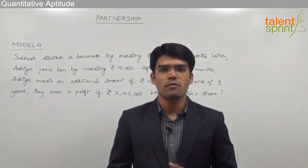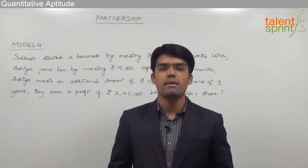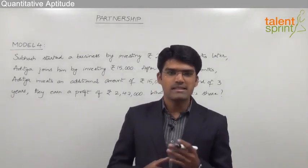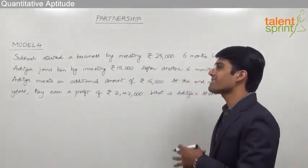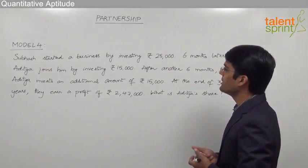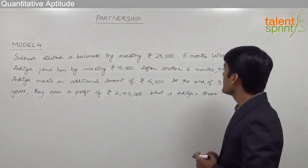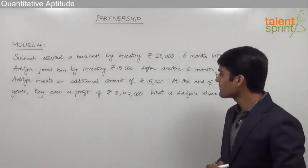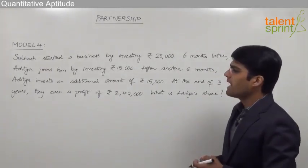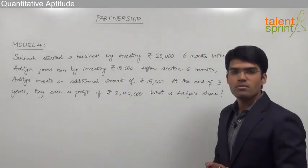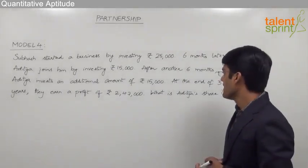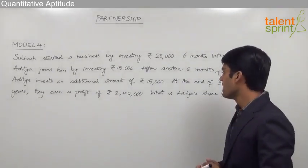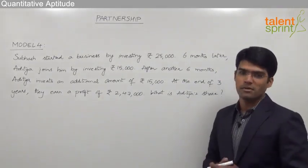Let us now take the fourth module from partnership, where a particular partner invests an additional amount after some time. Subhash started a business by investing rupees 25,000. Six months later Aditya joins him by investing rupees 15,000. After another six months, Aditya invests an additional amount of rupees 15,000. At the end of three years, they earn a total profit of 2,47,000. What is Aditya's share in the profit?